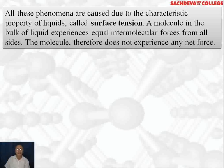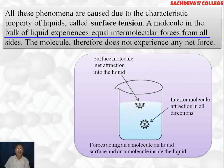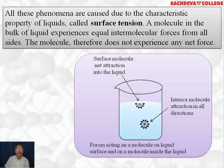Surface tension is a characteristic property of the liquid. A molecule in the bulk experiences equal intermolecular forces from all sides. However, a surface molecule is attracted by molecules in the bulk but there are no molecules above the surface, so it is not attracted from the top. Therefore there is a strain on the surface molecules — they are attracted downwards, giving rise to a convex or concave shape due to surface tension.